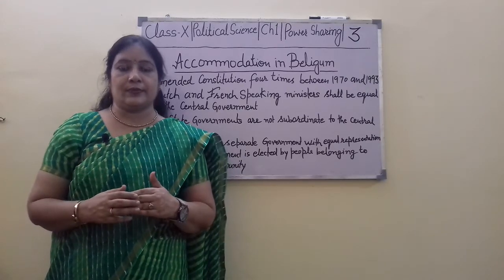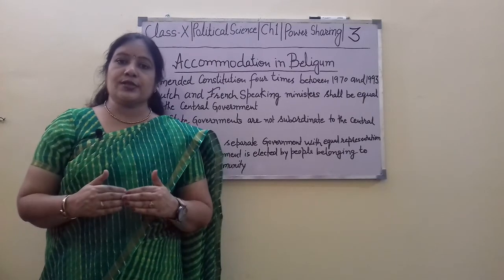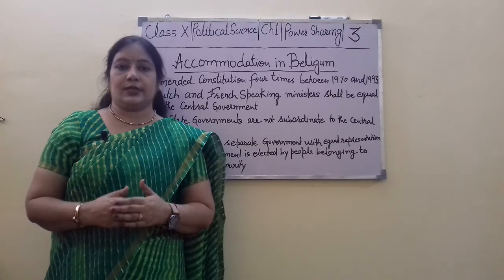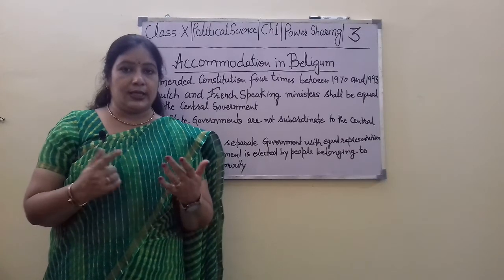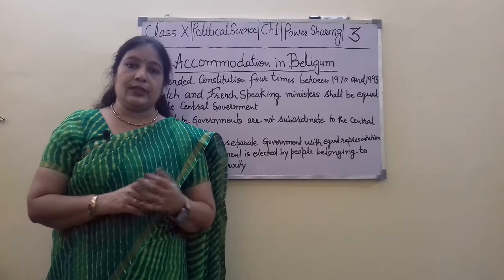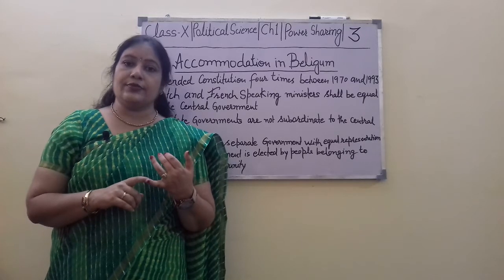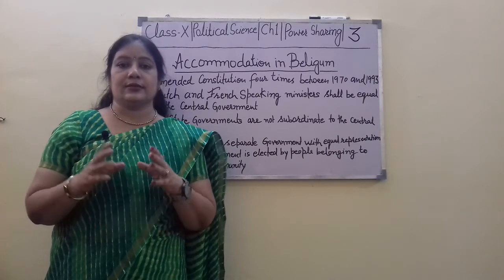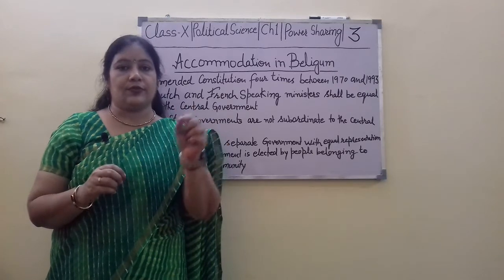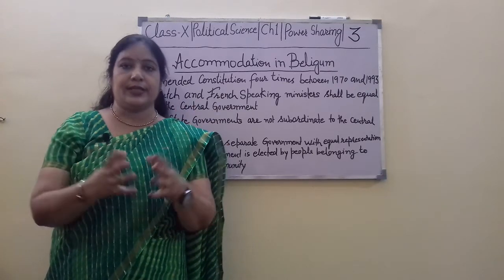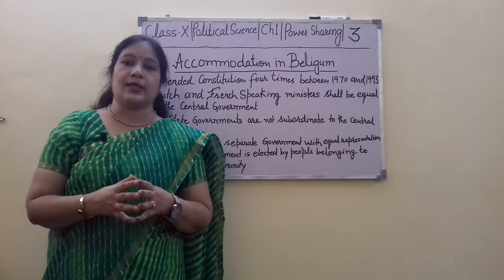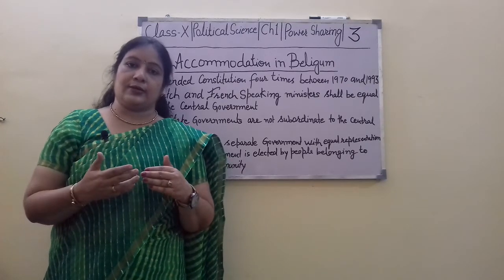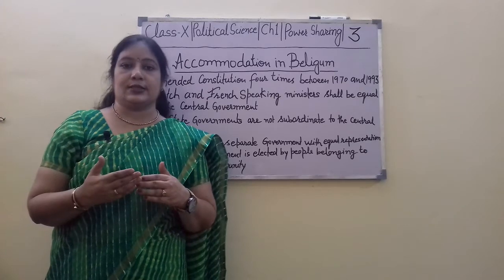The other step was the community government. Because there are different languages — German, French, and Dutch — people can vote for their own community government. This community government works to promote their own language and their own culture.